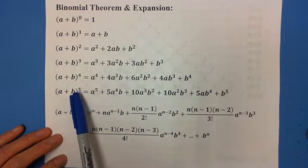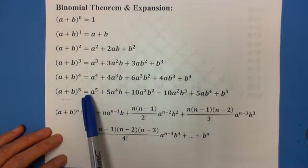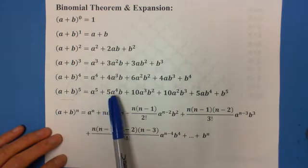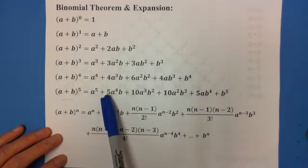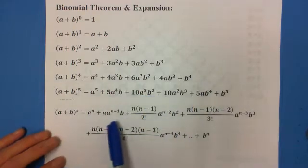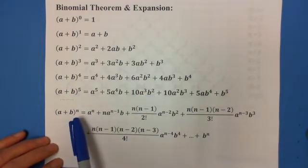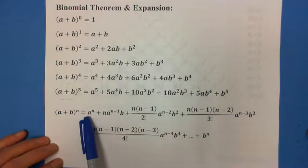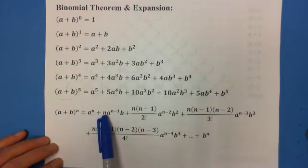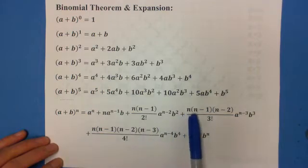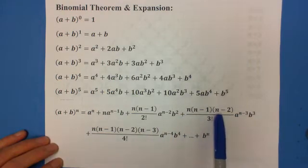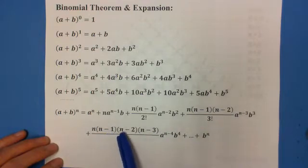If you expand to the 5th exponent, the coefficient is 1, 5, 10, 10, 5, 1. Those coefficients, using the binomial theorem, follow the pattern: 1, n, n(n-1) over 2 factorial, n(n-1)(n-2) over 3 factorial, and so on.